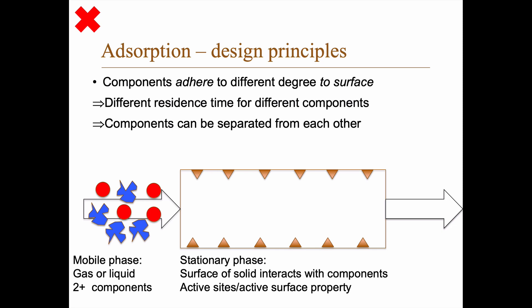How does adsorption work as a separation process? You have a mobile phase and a stationary phase. The mobile phase is either gas or liquid and contains two or more components that you want to separate from each other. The stationary phase is a surface of a solid that interacts with one or more of the components, and it has active sites or an active surface property that makes these components interact.